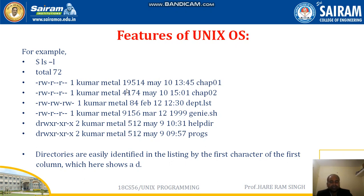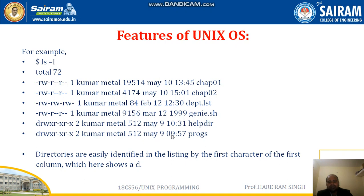Next is kumar — kumar is the owner of this file. Progs is the group name. Kumar belongs to a group called matter. The file size is 512 bytes, meaning the file progs has 512 bytes. Next is May 9 at 9:57 — that is the last modification time. The file was last modified on May 9th at 9 hours 57 minutes. So similarly, all files have their own seven attributes.